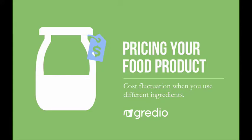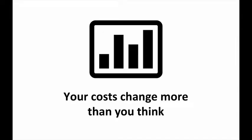Welcome back to pricing your food products. As mentioned last time, we're going to talk about how costs fluctuate when you use different ingredients, or your prices go up, or you cross batches. Costs change more than you think — if you buy flour at one place and flour at another place, it's two different prices. Then your butter goes up, your maple syrup goes down, and you have to keep track of all these price increases and decreases, labor rates, and packaging. Your cost is constantly going up and down, though you're trying to keep it as low as you can.